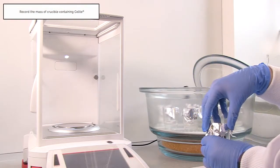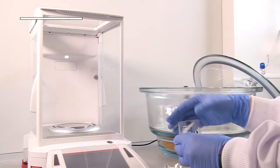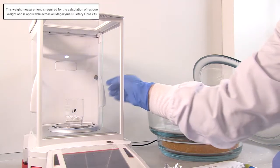Weigh the crucibles containing celite and record this weight. This weight measurement is required for the calculation of residue weights.